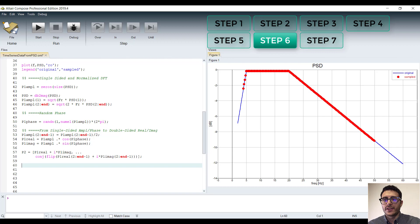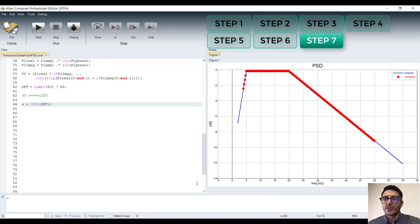And we scale it to reverse the normalization. The last step is to leverage the inverse fast Fourier transform algorithm in order to generate the time series data from the discrete Fourier transform coefficients. And let's plot it.